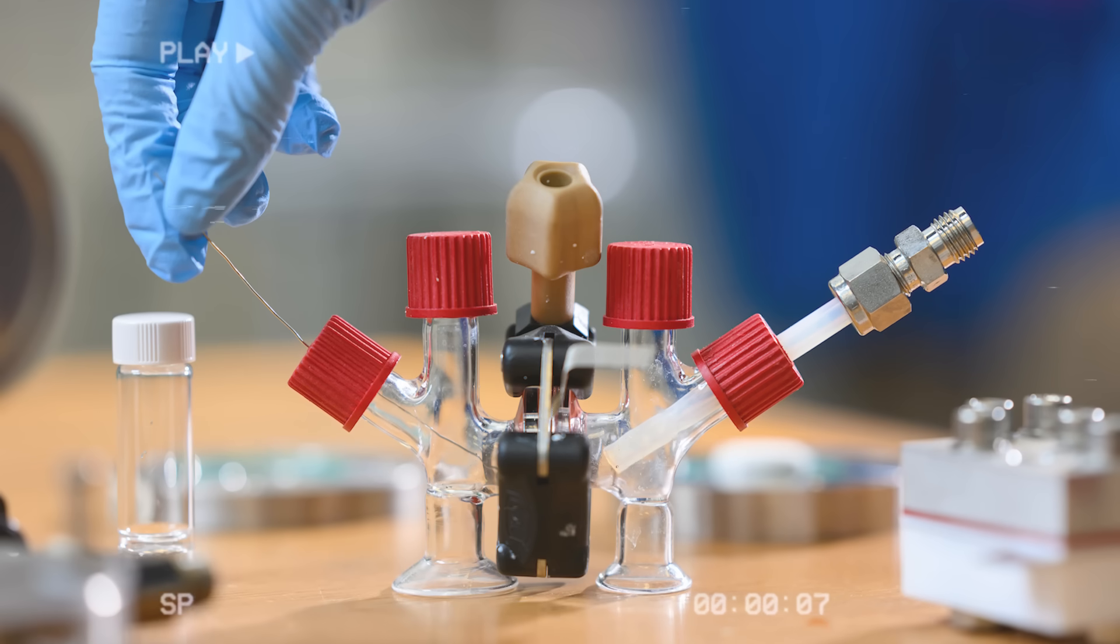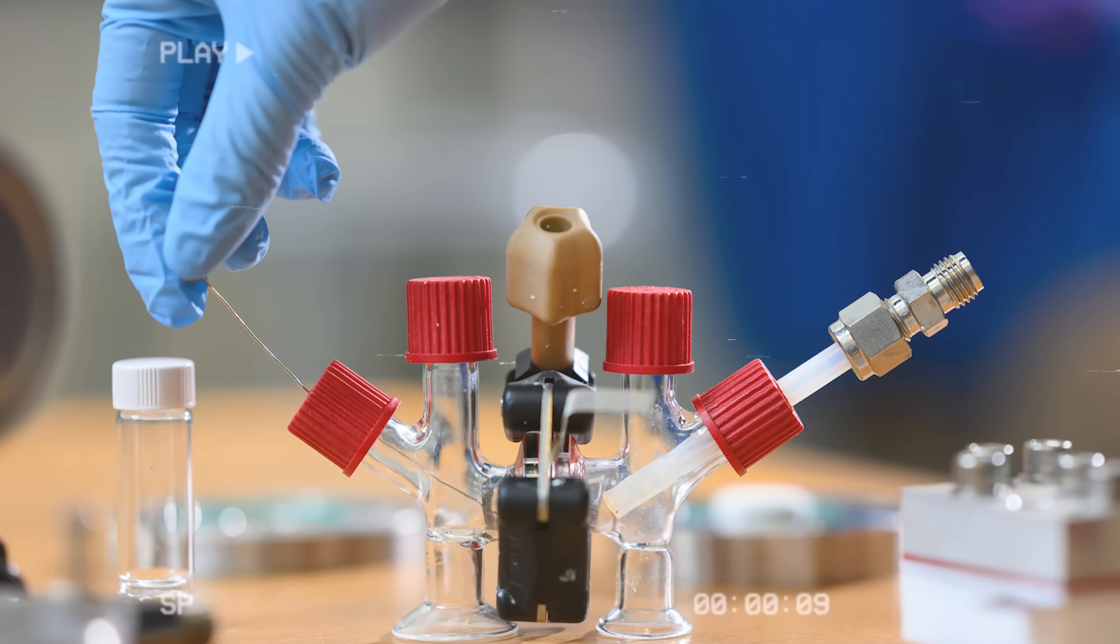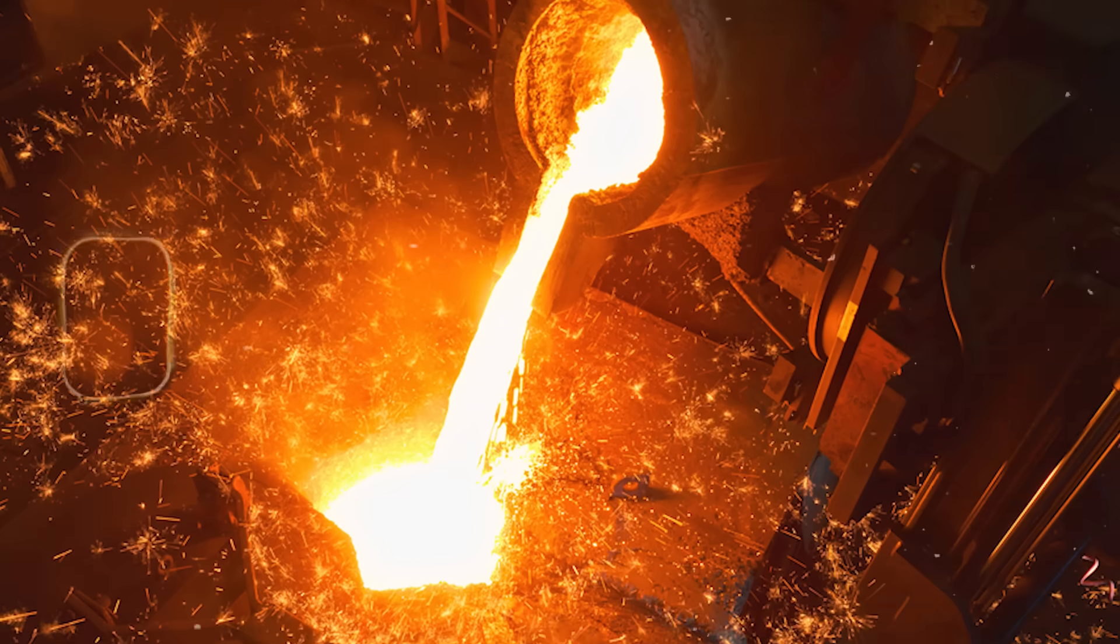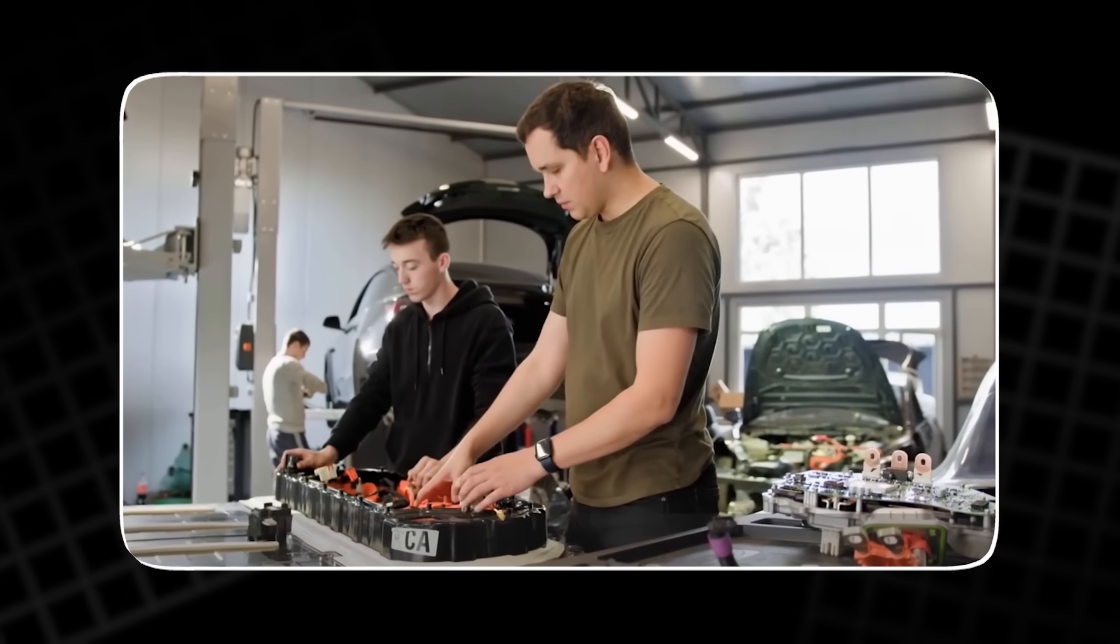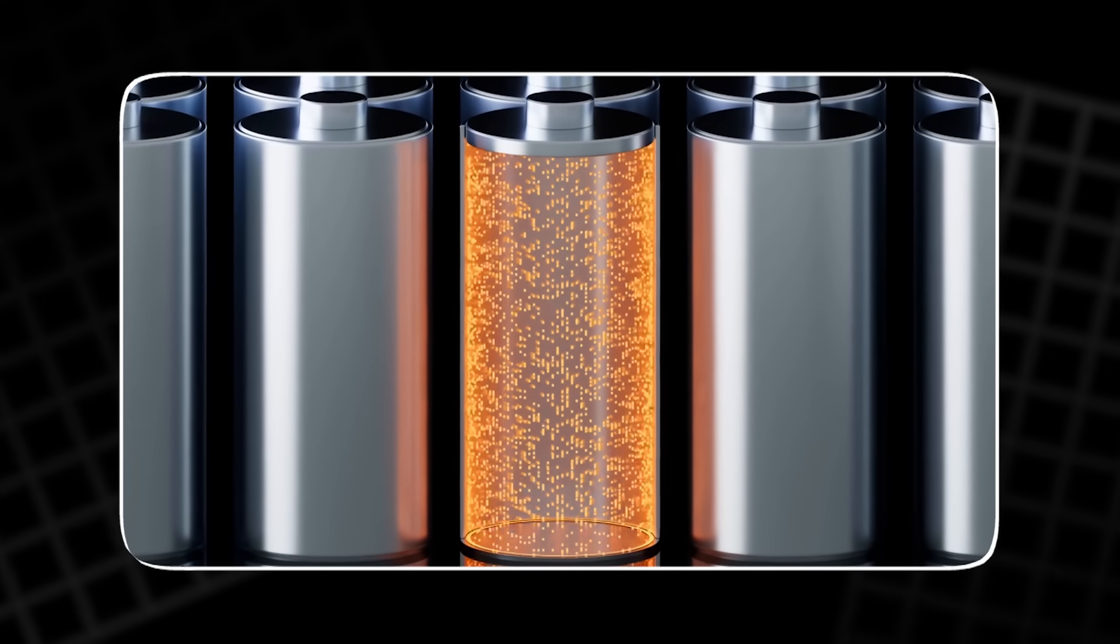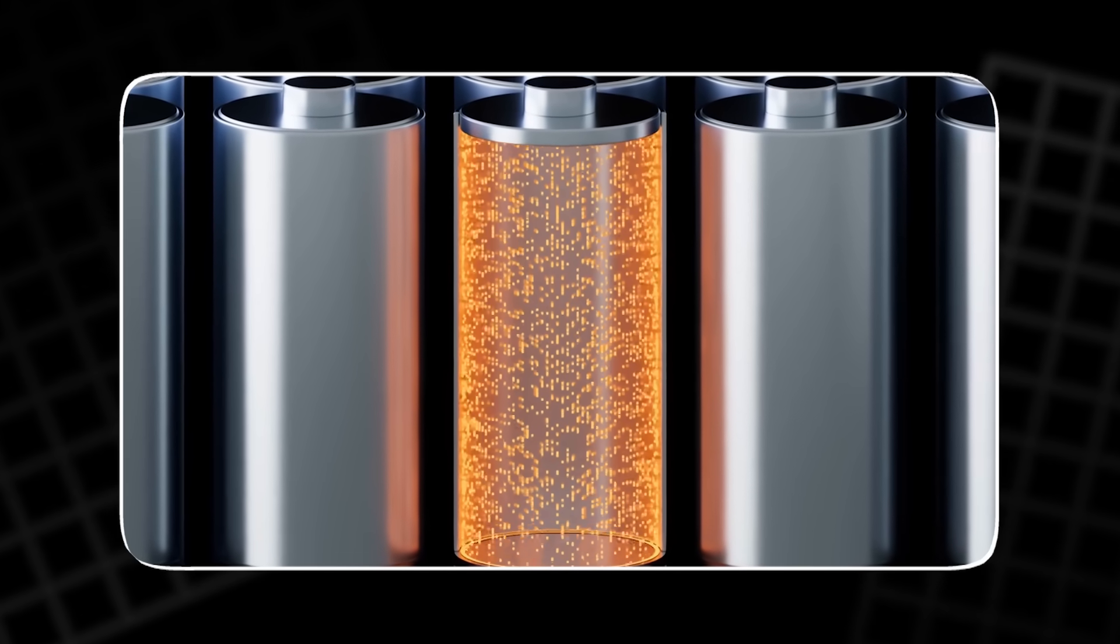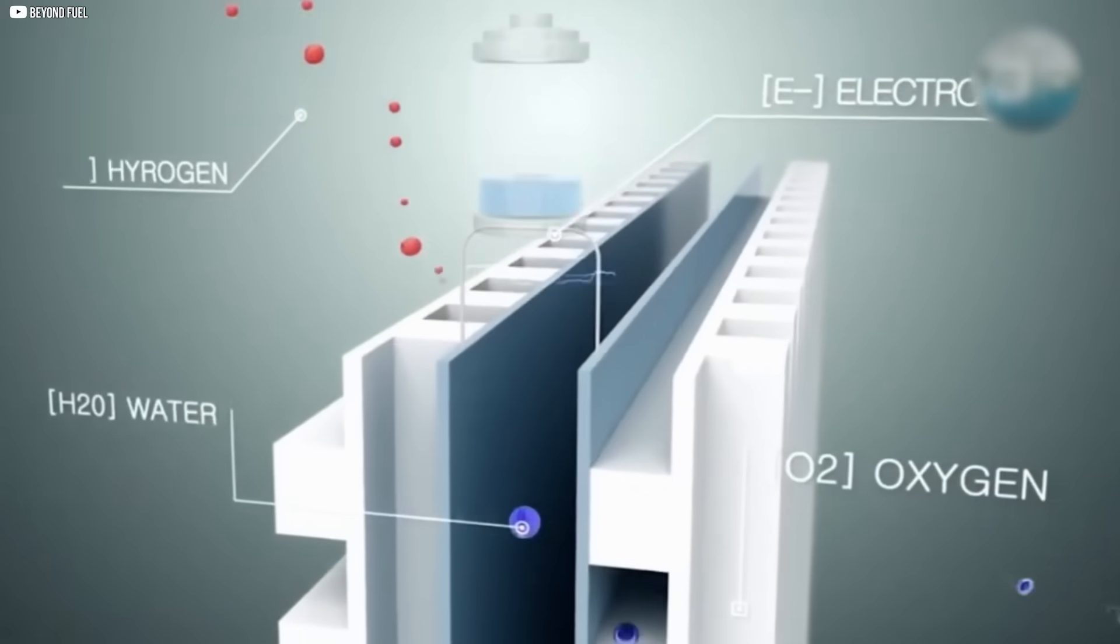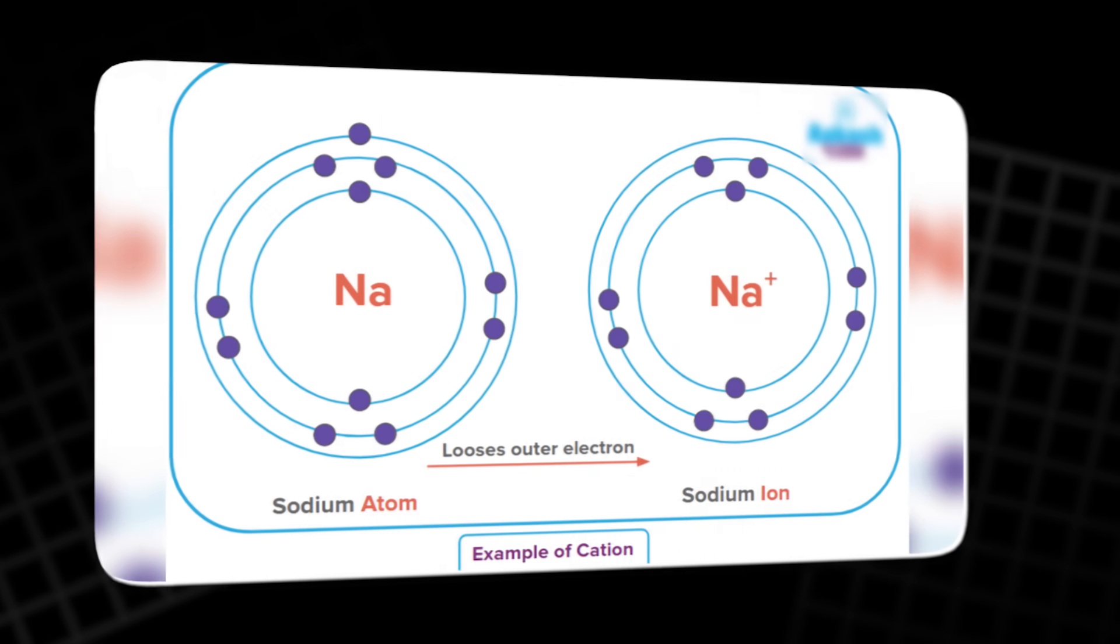At its core, the MIT sodium fuel cell turns chemical energy directly into electricity using molten metal. For the system to work, the sodium on the top layer needs to be in a liquid state, which means heating it to around 100 degrees Celsius. Once molten, the sodium begins a fascinating journey through the cell.